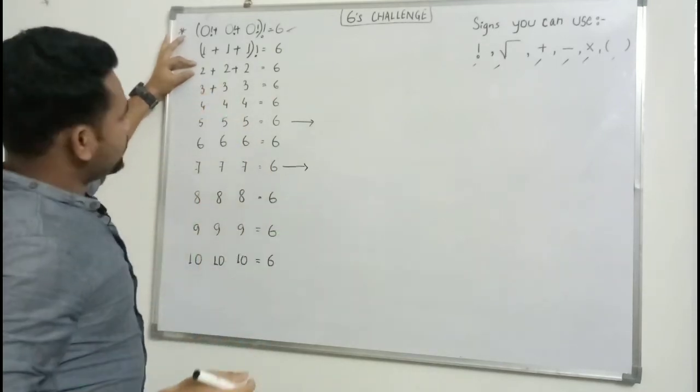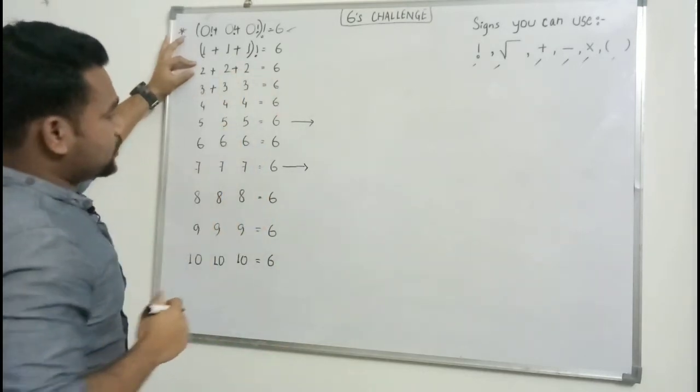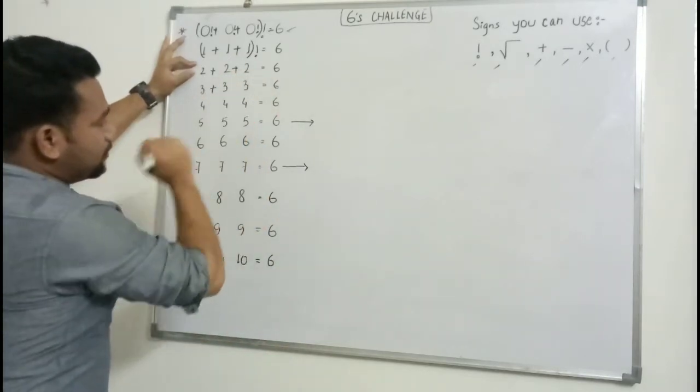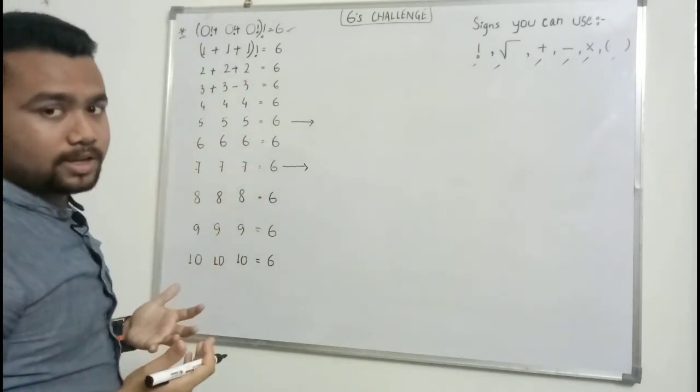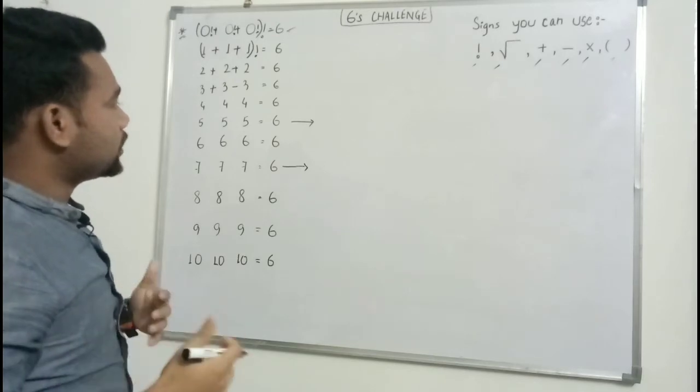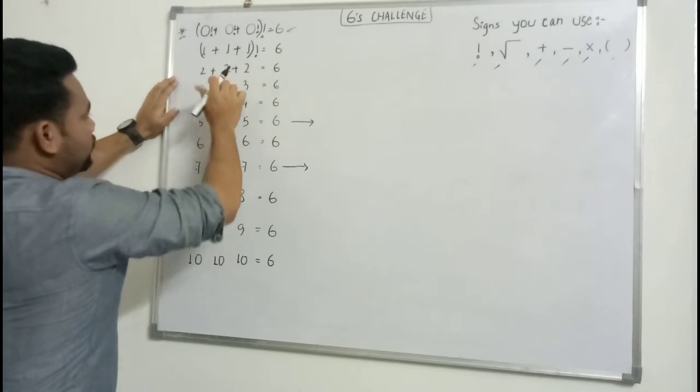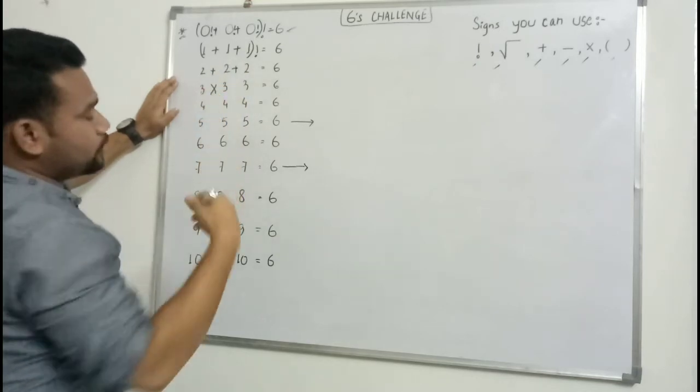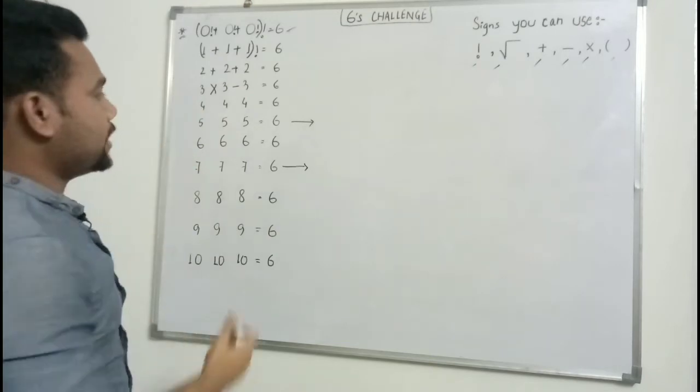Three plus three plus three is nine and we need to get six. Getting confused, you need to think what we can do. Smartly you can do it by three into three is nine, and then subtracting it by three you get six.